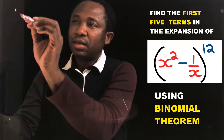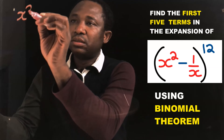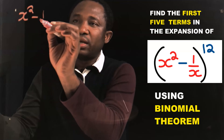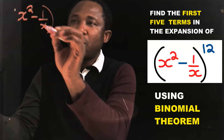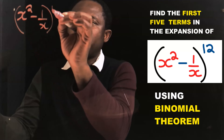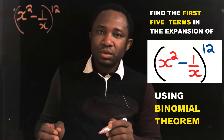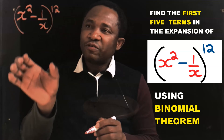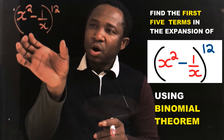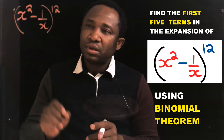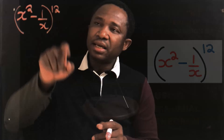Let's consider x squared minus 1 over x, all to the power of 12. We are going to find the first 5 terms of this expansion, considering that the index here is 12.